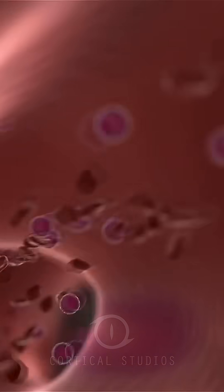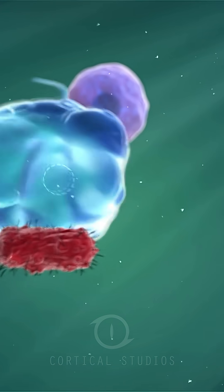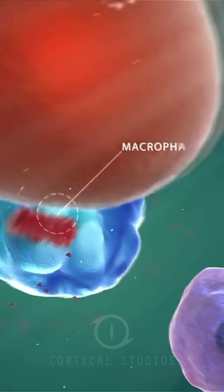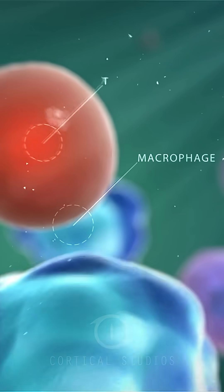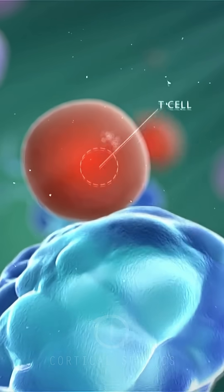The T cells and B cells go to the spot of the inflammation. At the spot of the inflammation, the T cells help the other inflammatory cells to attack the bacteria as effectively as possible.